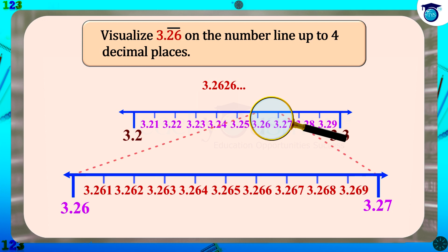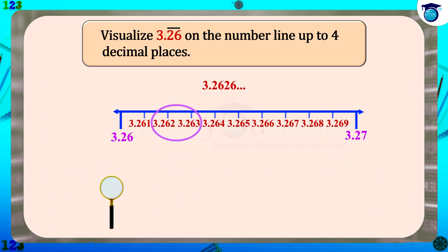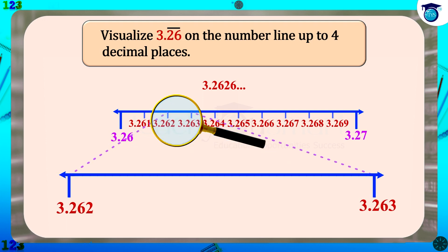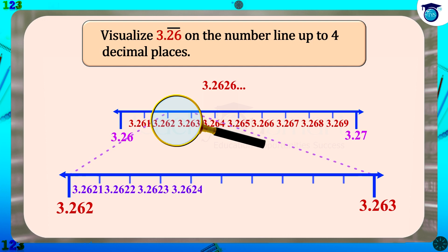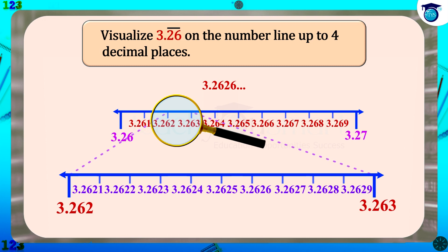3.2626 lies between 3.262 and 3.263. On dividing the distance into 10 equal parts, we get each part as 3.2621, 3.2622, etc. to 3.2629. Therefore, the sixth part represents the point 3.2626.